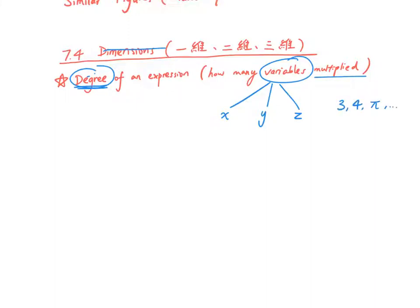For numbers like 3, 4, or pi, they always equal to the same values and they won't change, then we do not say they are variables, they are just some constants.